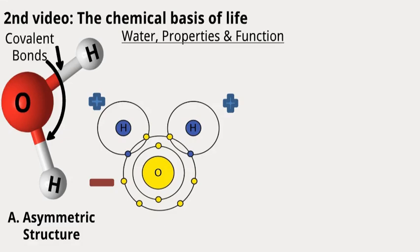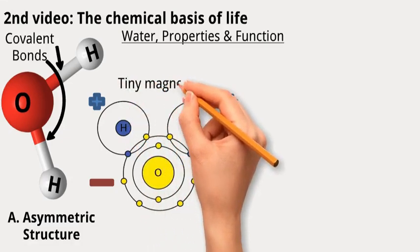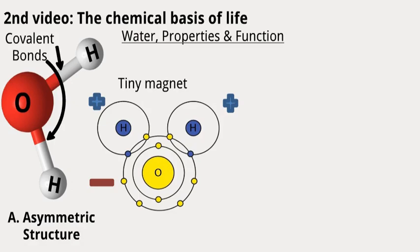So water ends up being like a tiny magnet with a positive side and a negative side. This is what we mean when we say water is a polar molecule, like a tiny magnet with two different ends.